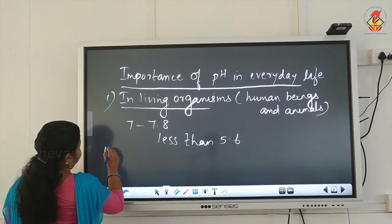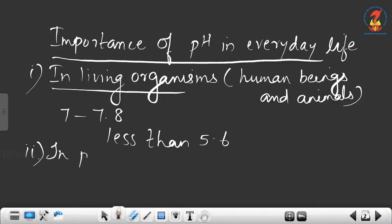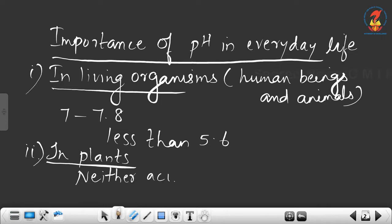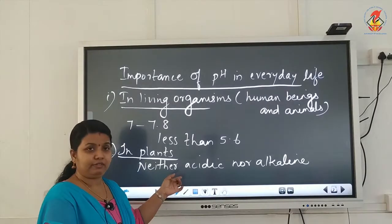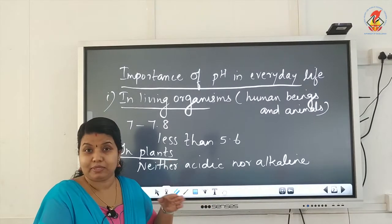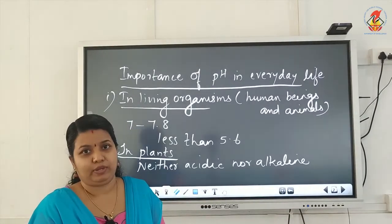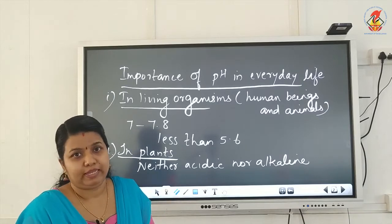The second point is the importance of pH in plants. For maximum crop growth, the soil preferred is one where the pH value is neither acidic nor alkaline — alkaline means basic. So a neutral soil is preferred for maximum crop yield. Farmers can collect a soil sample from their field and take it to soil testing laboratories where the pH of the soil is measured.